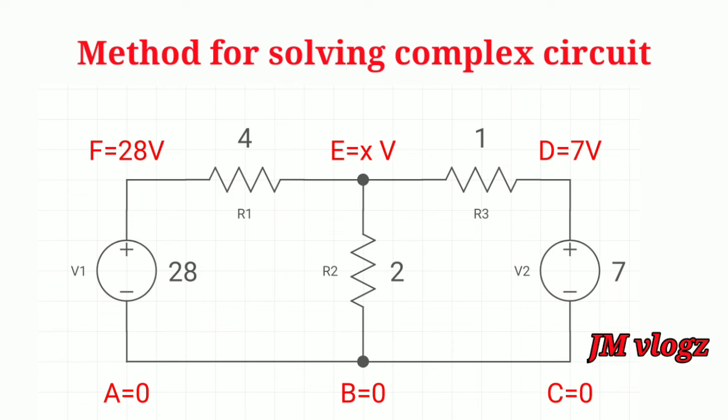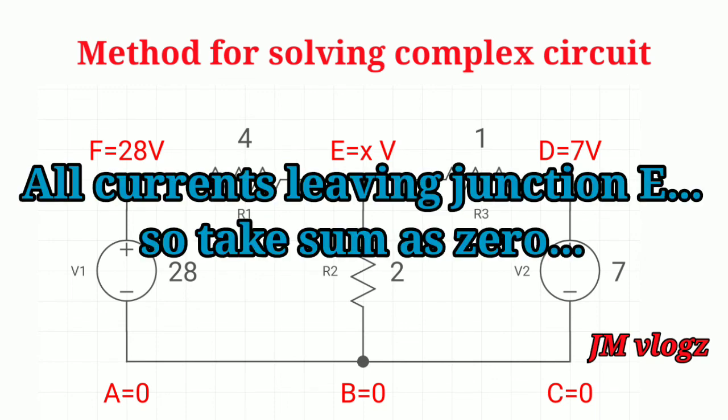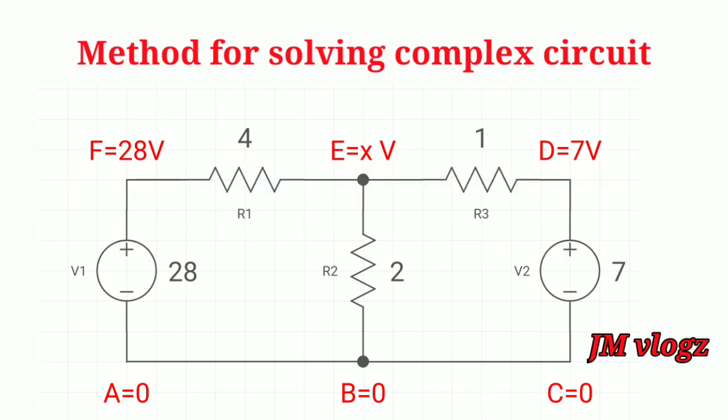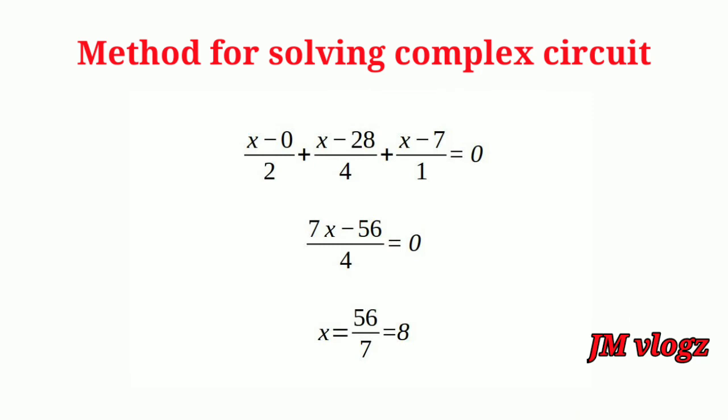According to tip number 3, we take E as higher potential and all these currents are leaving from junction. So we can take the sum of these currents equal to 0. By assuming all the currents are leaving from this junction, we get (X minus 0)/2 plus (X minus 28)/4 plus (X minus 7)/1 is equal to 0. And from that we can find out the value of X: 56 by 7 is equal to 8.